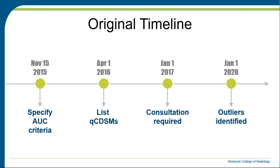Just as a reminder, the AUC program was part of PAMA of 2014, the Protecting Access for Medicare Act. The original statutory timeline required the program to be essentially up and running live by January 1st, 2017. We're now in late 2018, so that has been delayed, giving us more time to prepare and educate. The AUC criteria were due by November 2015. The Qualified Clinical Decision Support Mechanisms were to be released by April 1st, 2016, which actually occurred in June 2016. The program requires outliers to be identified, originally intended for 2020.